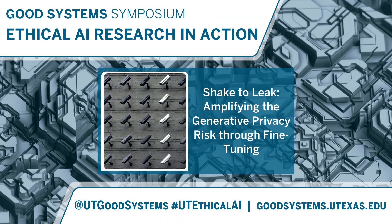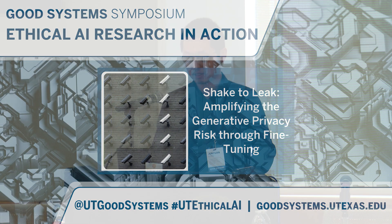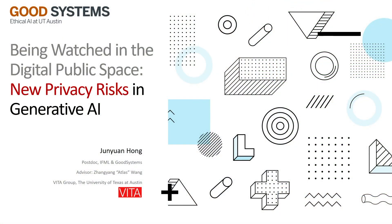Thank you for the introduction. I'm very honored to be here to share my research. The previous title is kind of wrong, so I squeezed the title into a very short question: What's the new privacy risk in generative AI? I want to connect this to public space — when you put your images on the internet, what will happen when generative AI uses your data to train models, and what are the privacy risks?